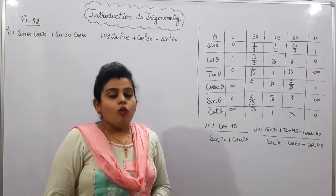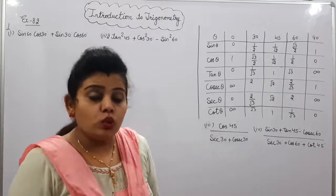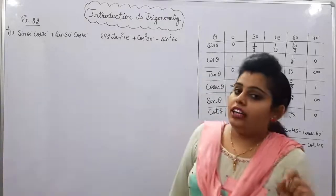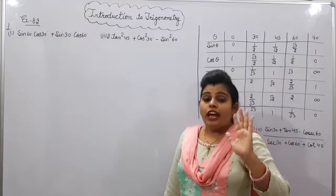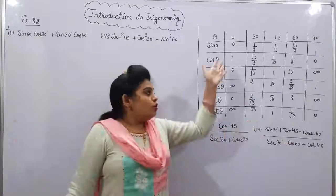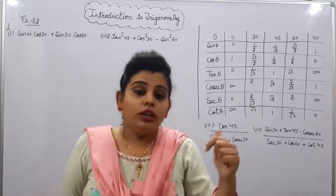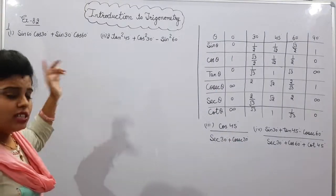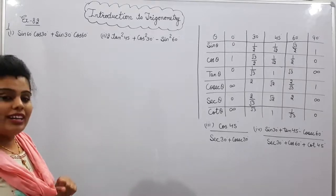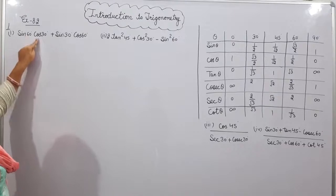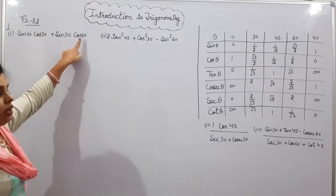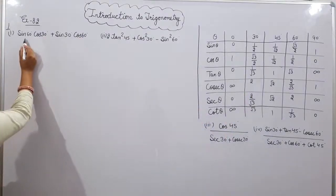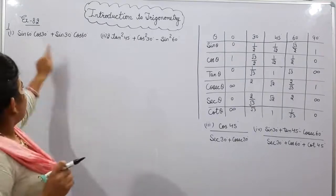Now we will start Exercise 8.2. In this exercise, trigonometric ratios of specific angles are given and we have to put the values of these angles using the table explained in the previous video. Let's start with Part 1 of Question 1: sin 60 · cos 30 + sin 30 · cos 60. We will find the values of sin 60 and cos 30 from this table.